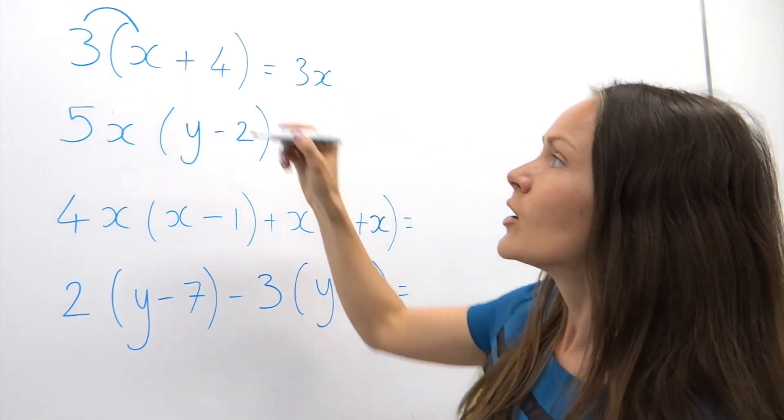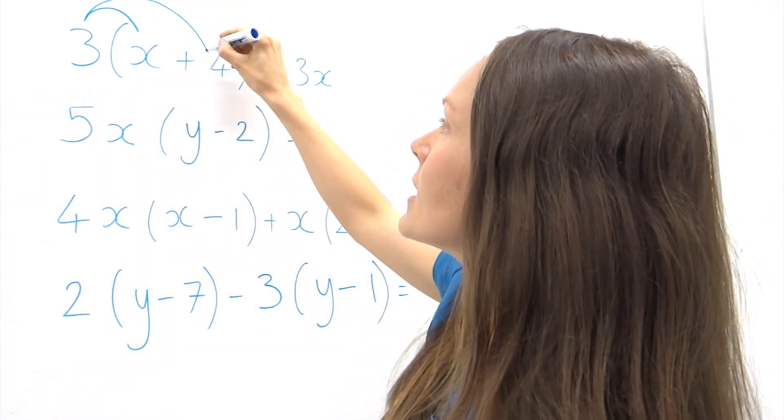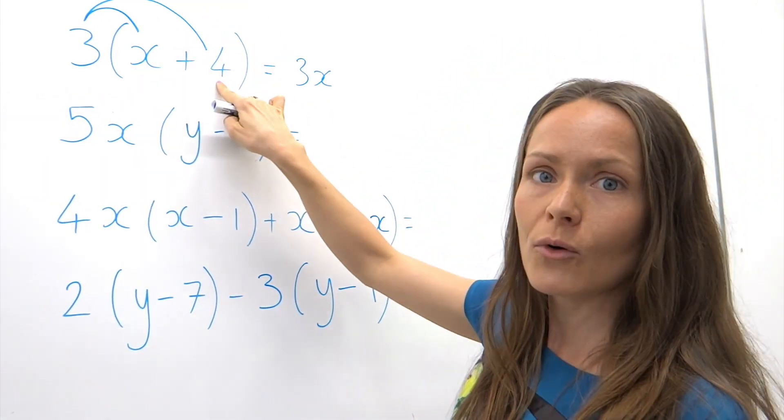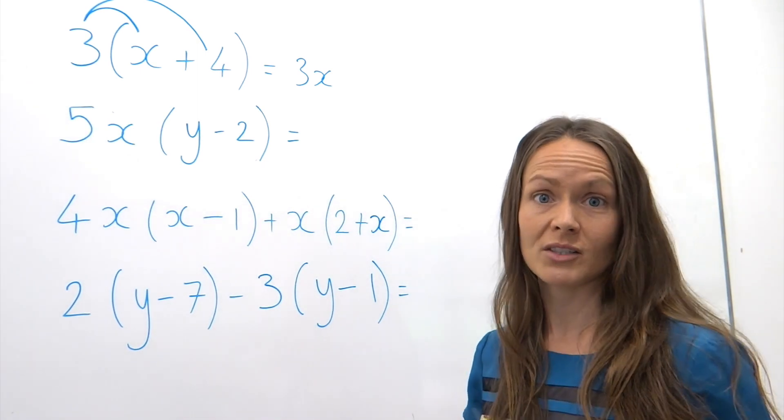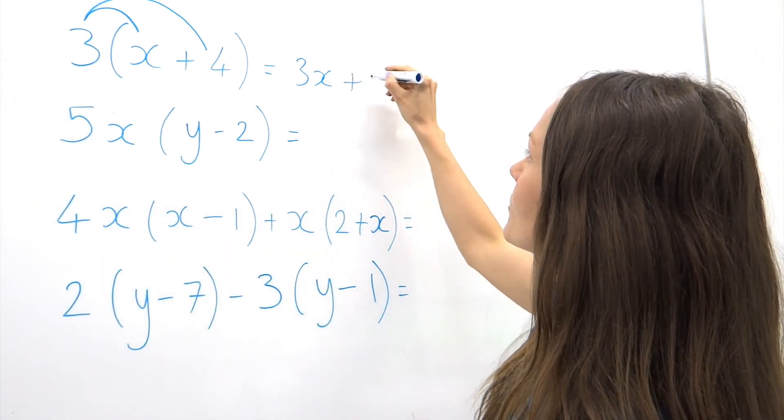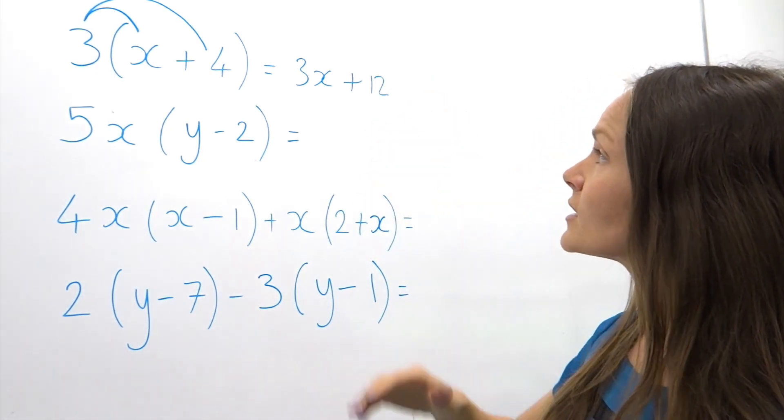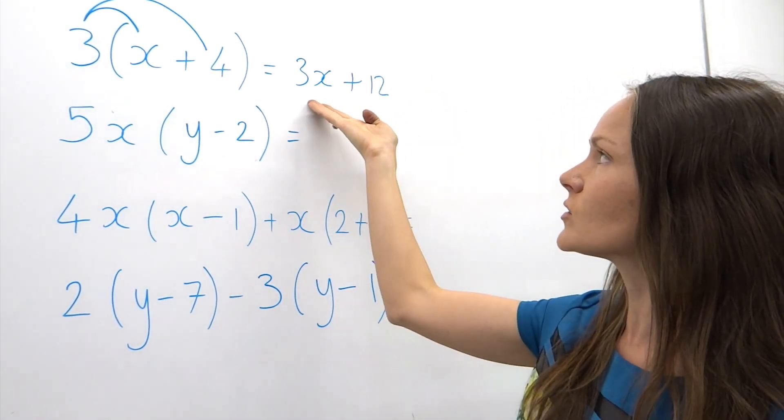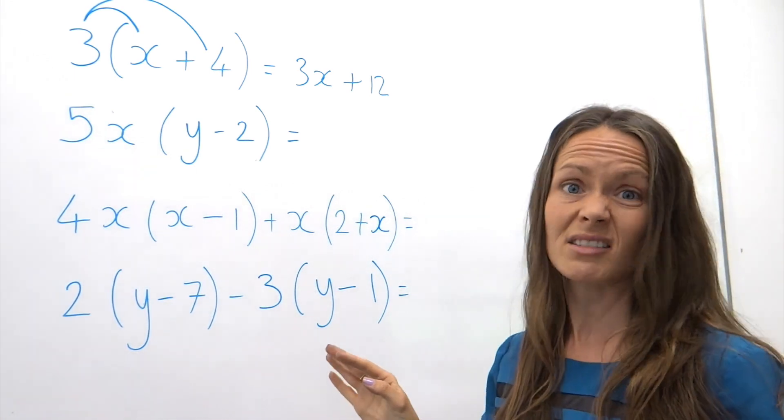Now for the second step. We're going to multiply the number 3 by positive 4. Well, 3 multiplied by 4 is 12, and this is a positive number, so I'm going to write plus 12. And that's finished. We can't add this x term to a number, so that's done.